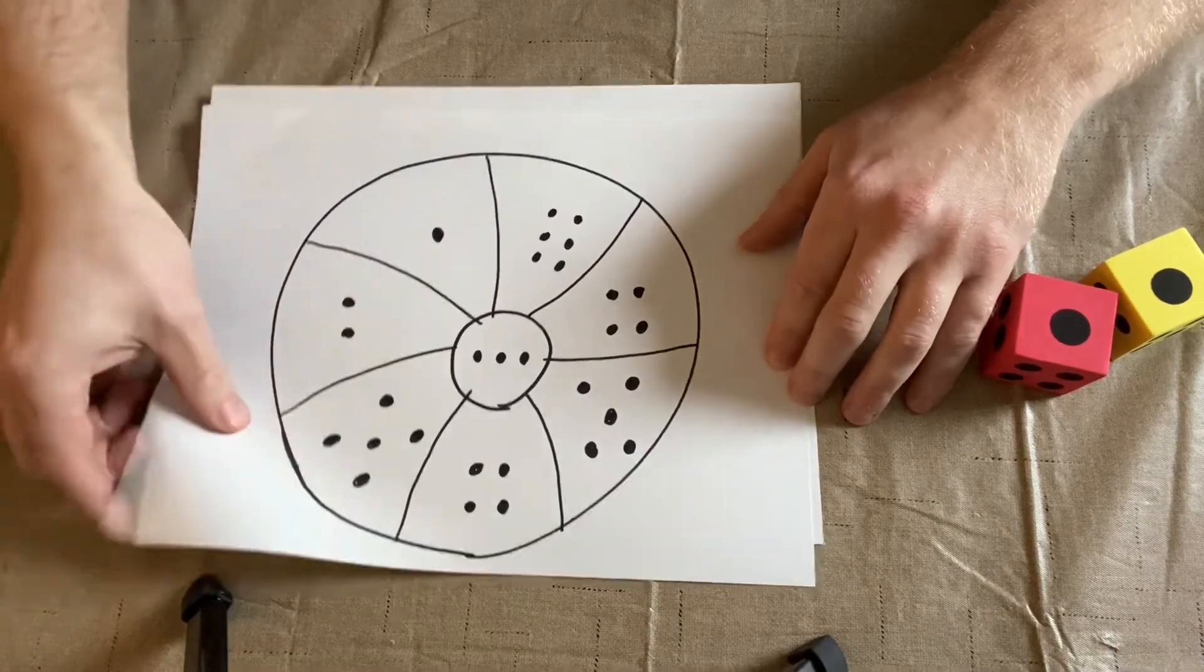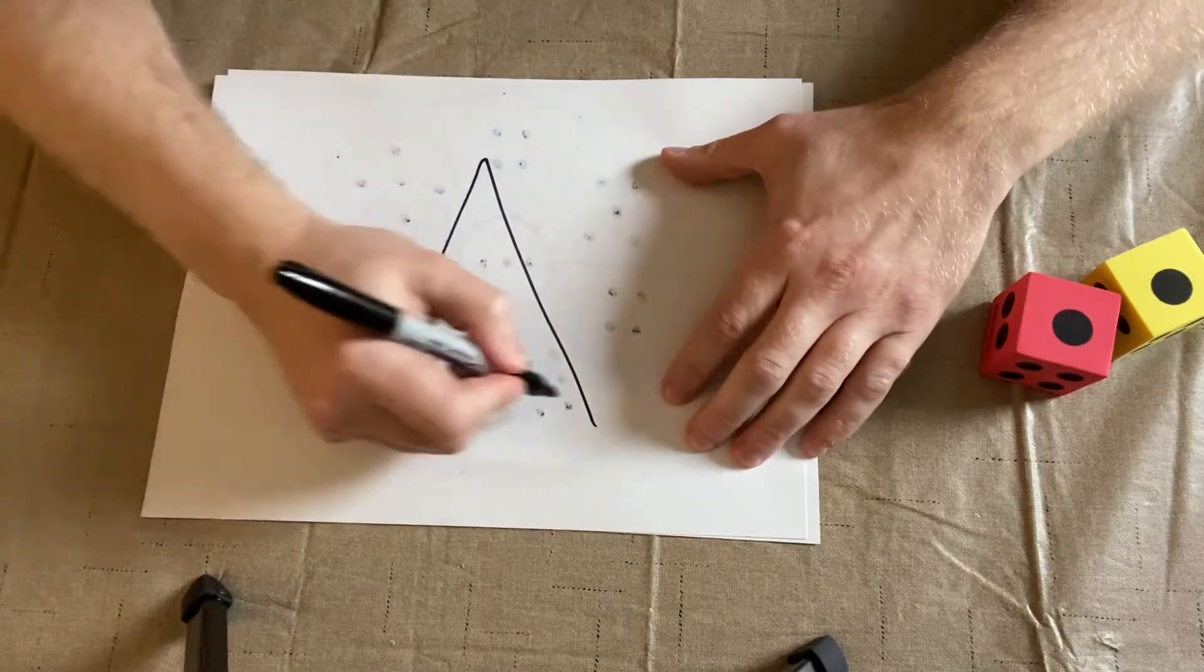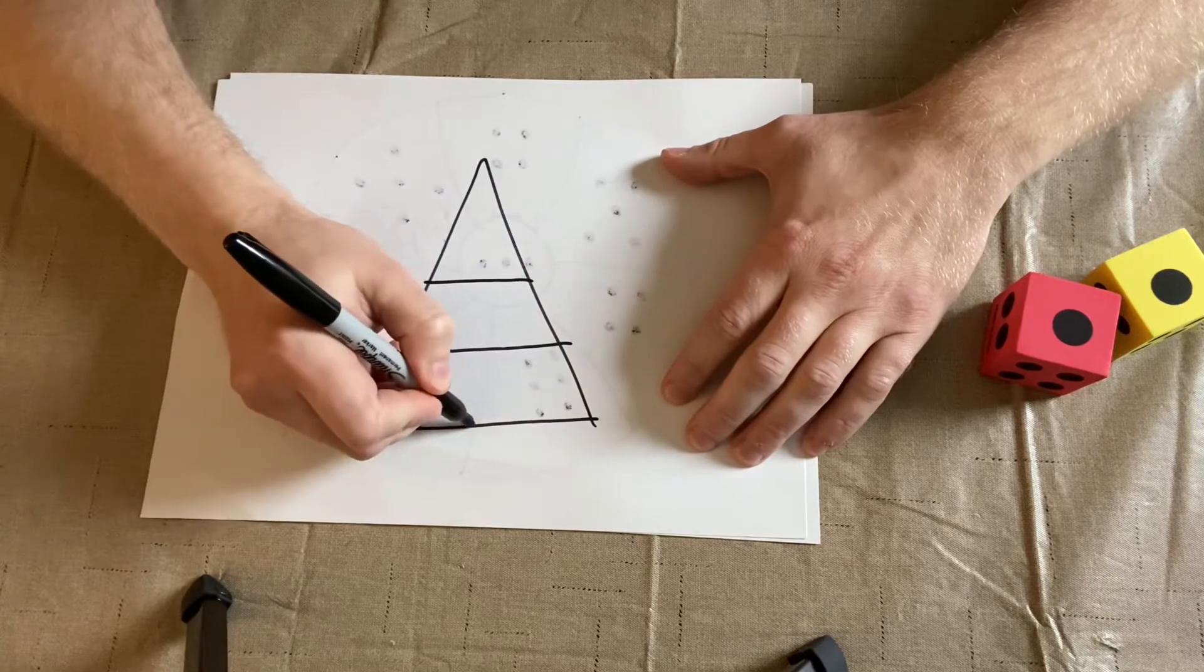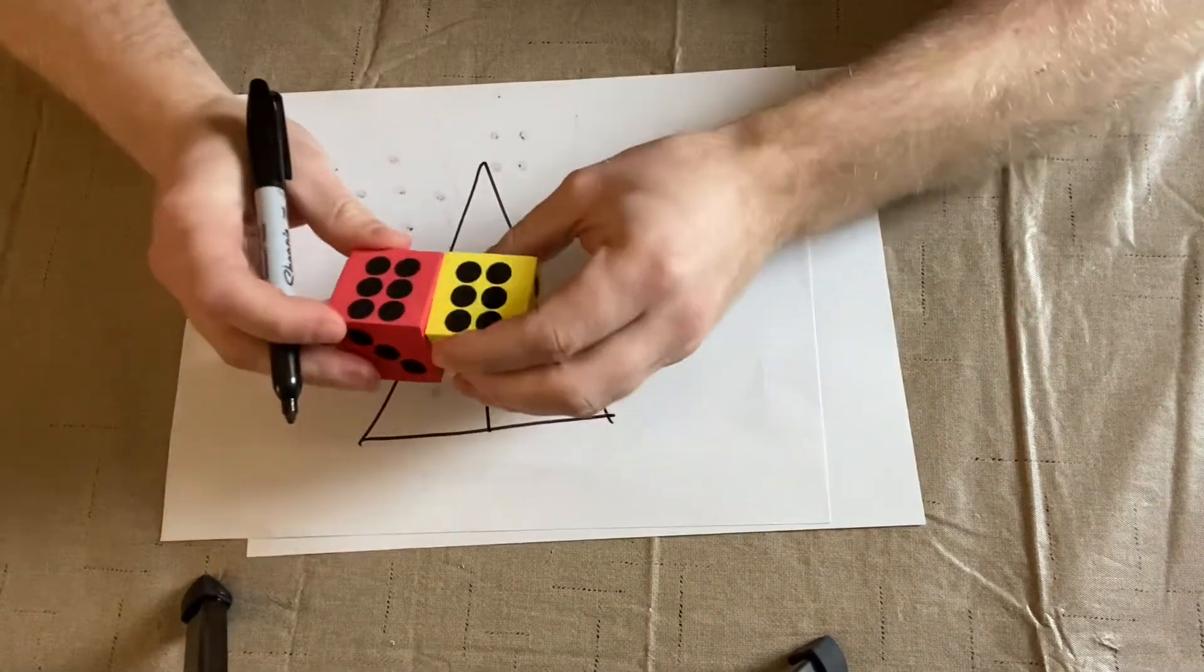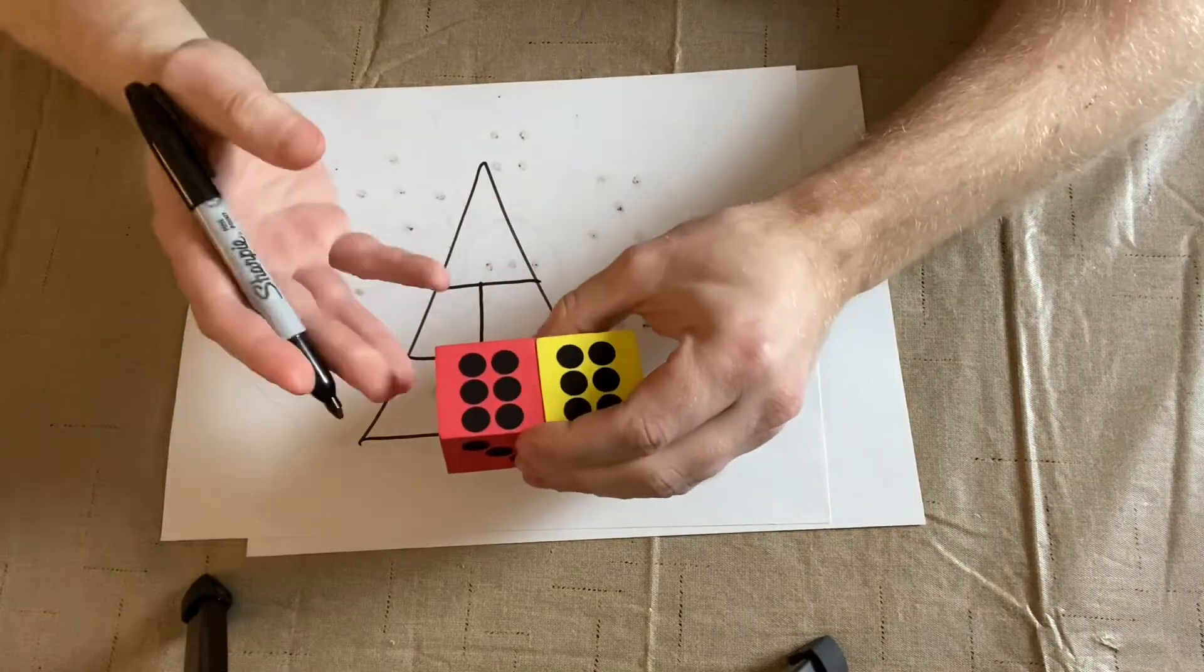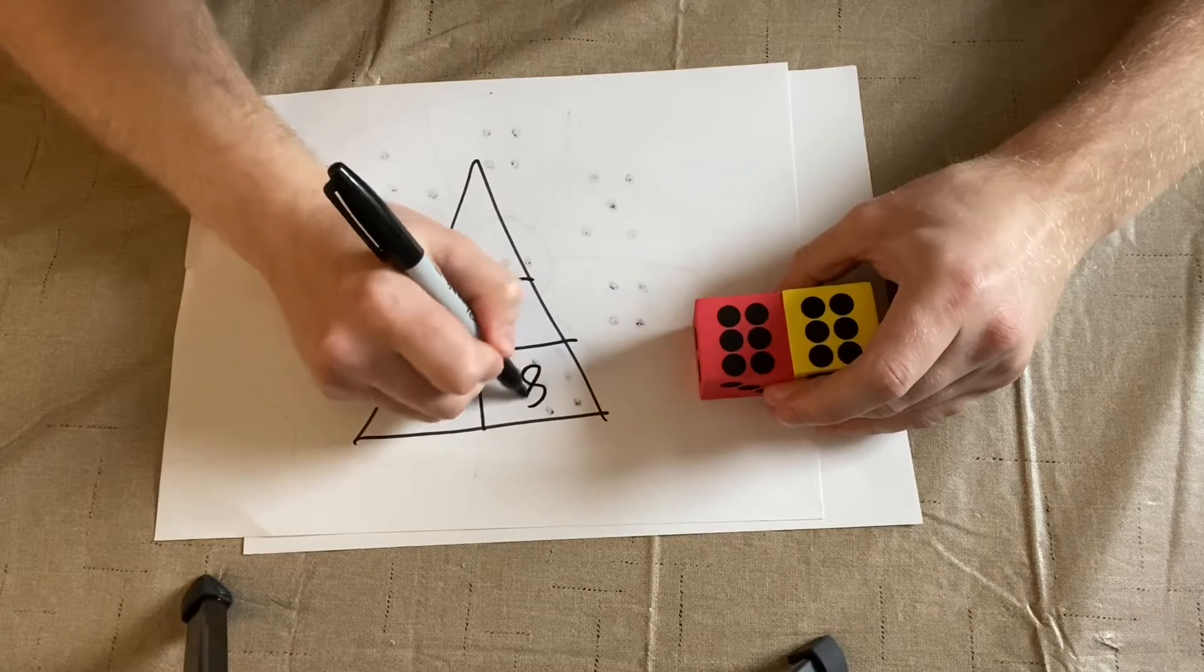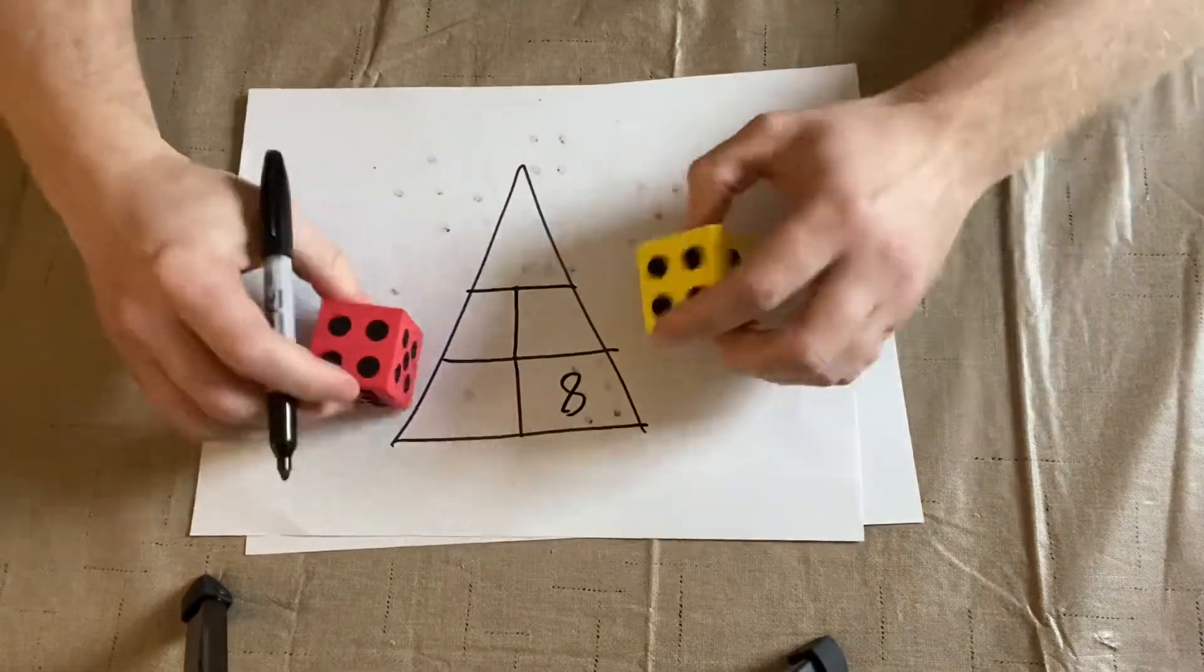You can also make one if you wanted. Say you wanted to just make it really tough on them, you could do two dice together and you'd have to make bigger numbers. So you could either draw the dots, or you could make the number. Like, we could put an eight, and then when the kid rolls two fours, they're going to color in the eight.